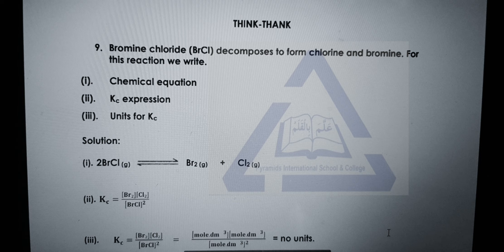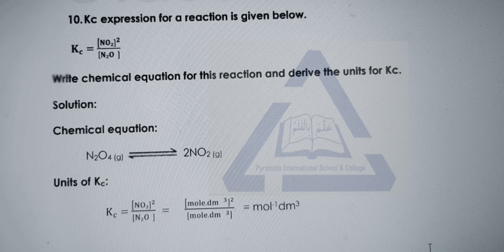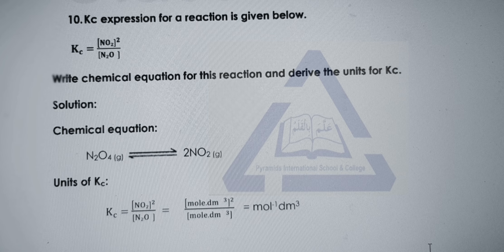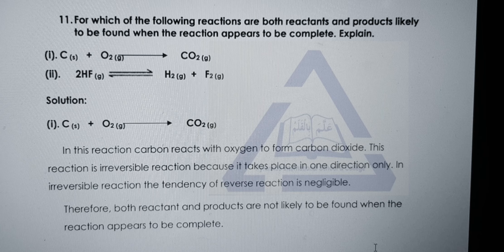The next question provides the equilibrium constant expression and asks you to write the chemical equation and derive units for Kc. Since products are always written in the numerator, the product here is NO₂ with a power of 2, meaning two moles of NO₂. The reactant is N₂O₄ with no power raised, meaning one mole. The chemical equation becomes: N₂O₄ in a reversible reaction giving 2NO₂. To find units, substitute the concentration units for reactants and product and simplify.